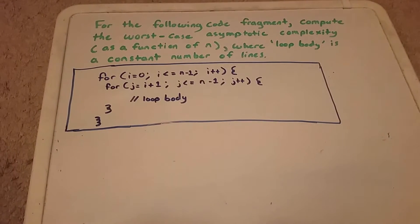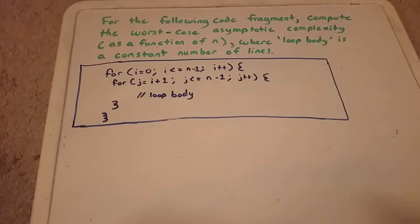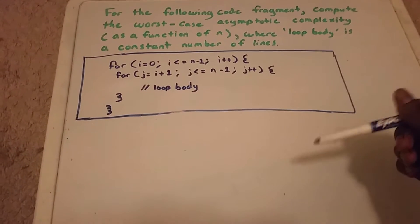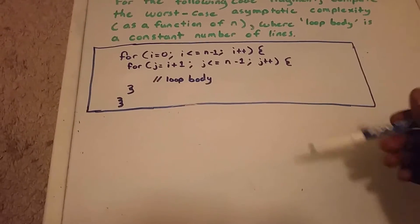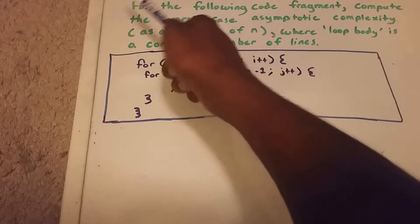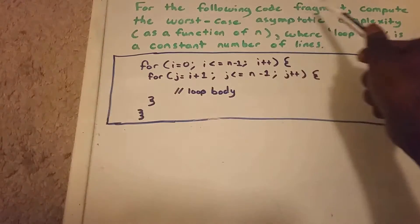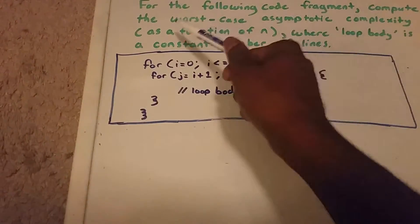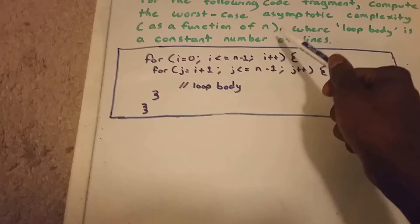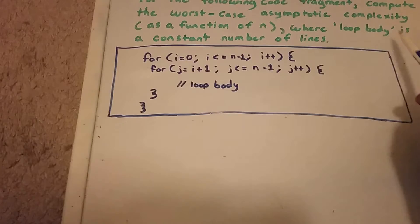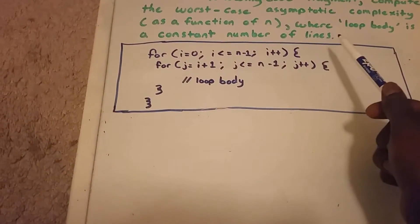Hey guys, this is a video on computing the time complexity of a code fragment using summations. For the following code fragment, compute the worst case asymptotic complexity as a function of n, where the loop body is a constant number of lines.